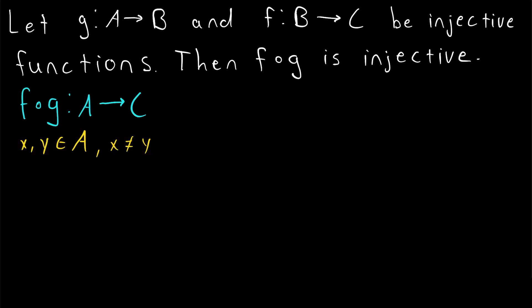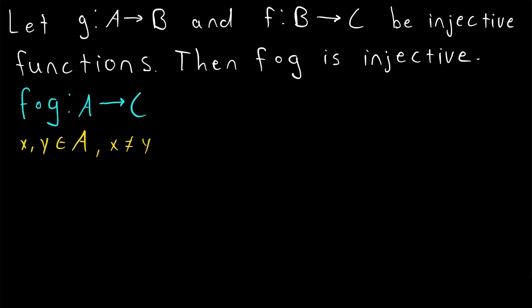We want to show that the images of X and Y under the function F of G must be distinct as well, since X and Y are distinct. We think through the progression of this function: an element is going to start being evaluated in the function G. What do we know about G of X and G of Y?